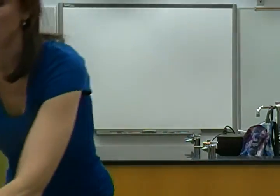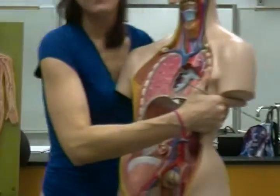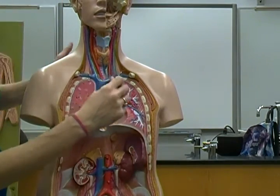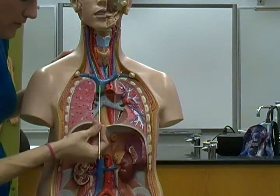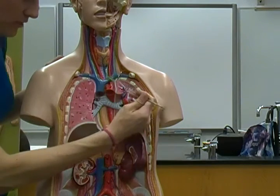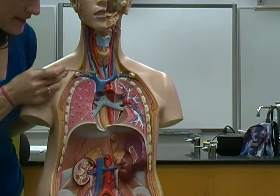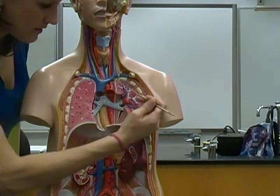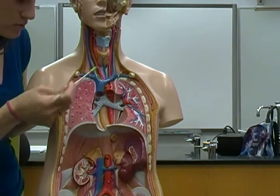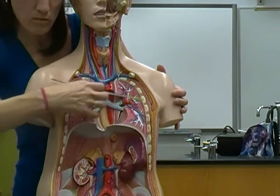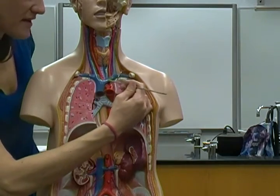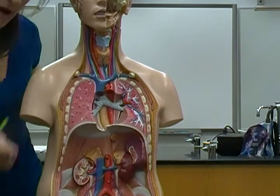On a larger model, we can see where the brachiocephalic veins go. The superior vena cava comes up out of the right atrium and has two major branches: the right brachiocephalic vein and the left brachiocephalic vein. Notice the right one is a lot shorter because it's coming from the right side of the body, while the left has further to travel.